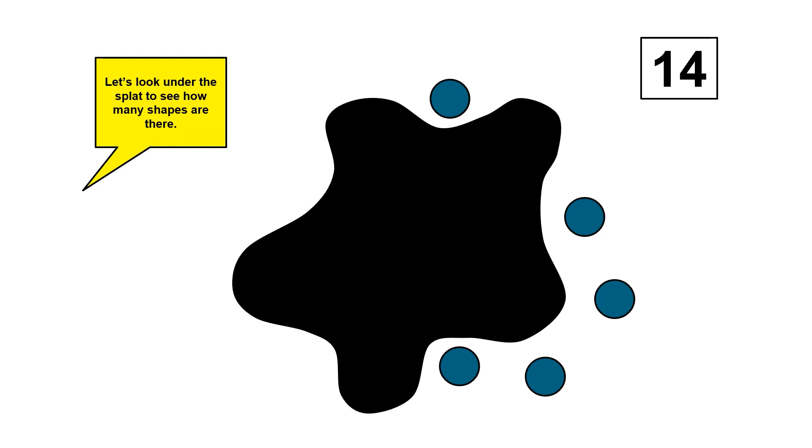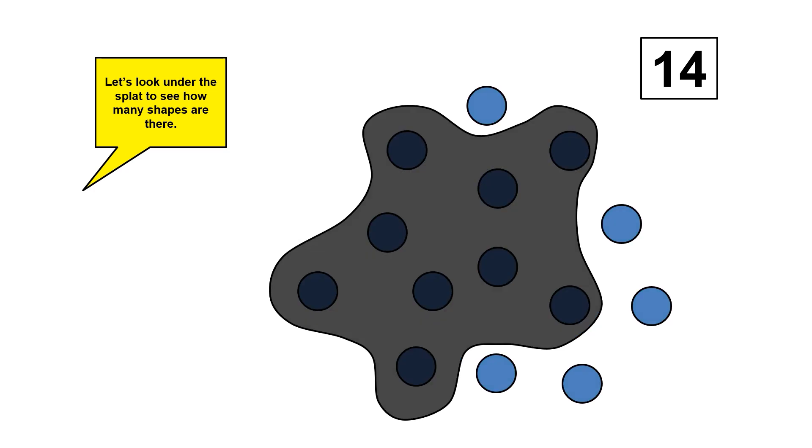Let's look under the splat to see how many shapes there are. There are nine shapes under the splat.